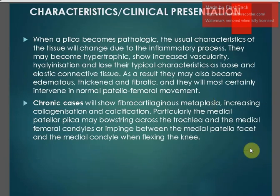When the plica becomes pathological, the usual characteristics of this tissue change due to the inflammatory process. The tissue may become hypertrophic with increased vascularity, and loses its typical elastic connective tissue properties. As a result, it may also become edematous, thickened, and fibrotic, and will most certainly interfere with normal patellofemoral movements. In chronic long-term cases, there will be fibrocartilaginous metaplasia, increasing collagenation, and calcification.